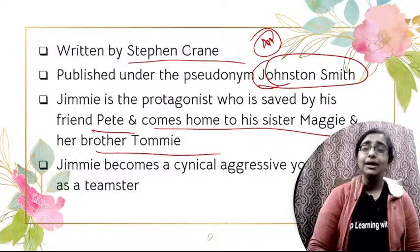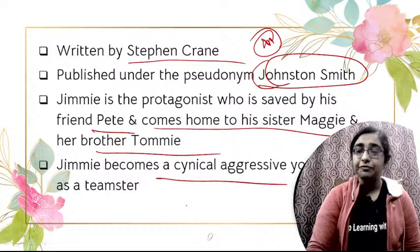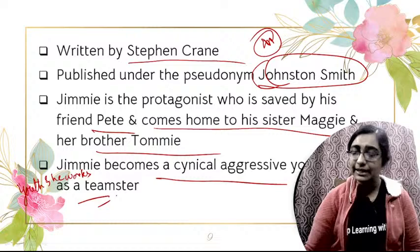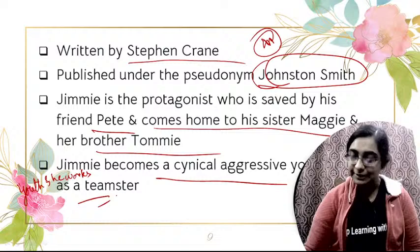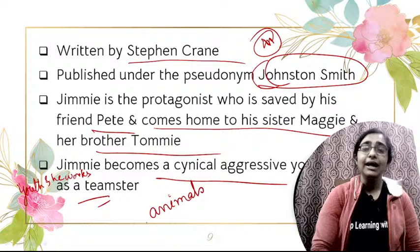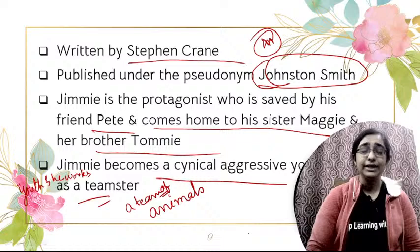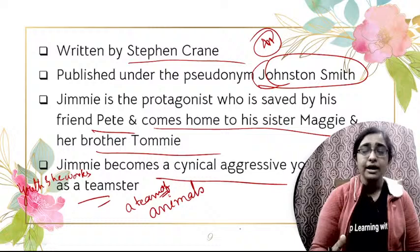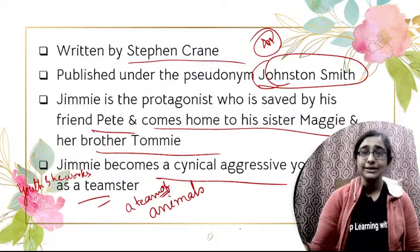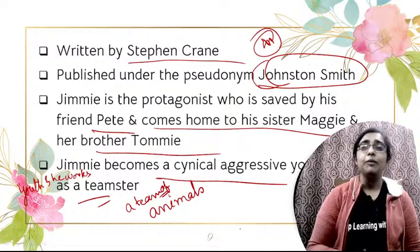Jimmy becomes a cynical, aggressive youth and works as a teamster — someone who trains a team of animals, or alternatively a driver who drives a group of trucks. Maggie begins to work in a shop factory and tries to woo Pete, who is a bartender. Nelly then convinces Pete to leave Maggie, and Maggie is rejected by her mother and becomes a prostitute — hence the subtitle, A Girl of the Streets.